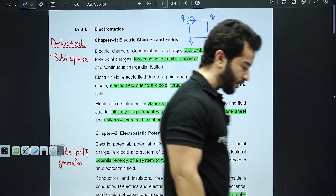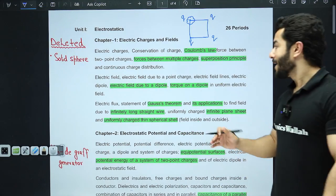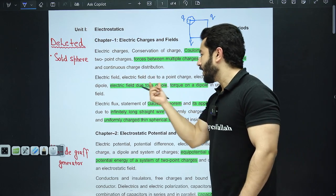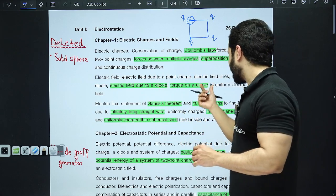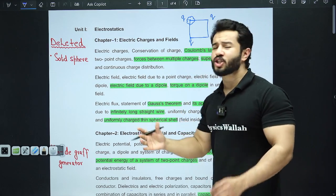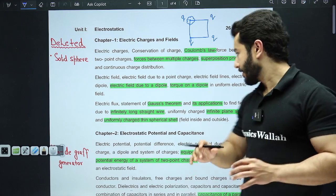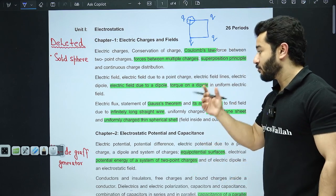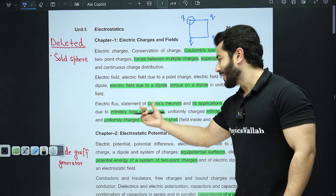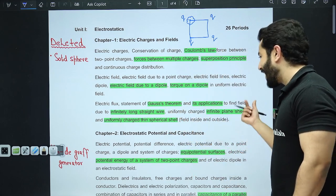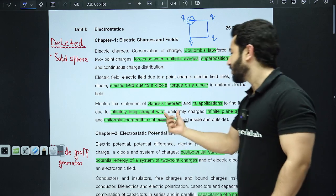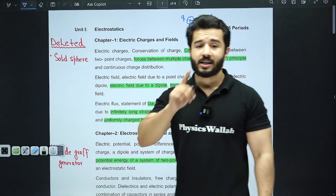You must have also seen questions like this: we have got a square or a rectangle and we have got charges on the vertex of this geometrical shape, and we have to find the net force on any one of the corners. This is very important. Next is electric field due to a dipole, torque on a dipole, Gauss theorem is extremely important and its applications.